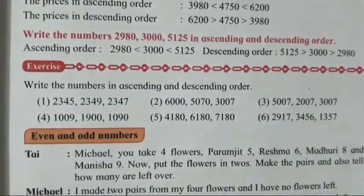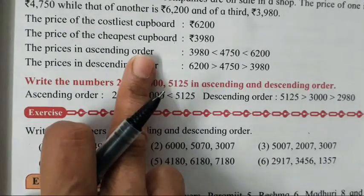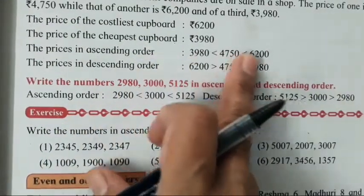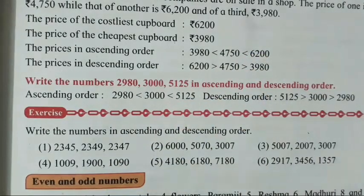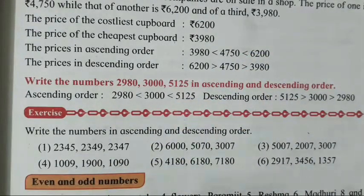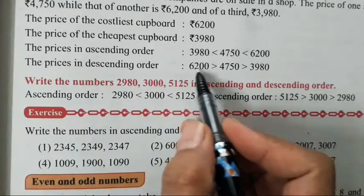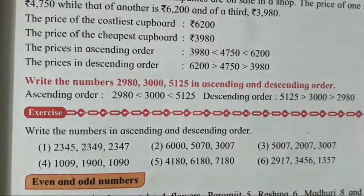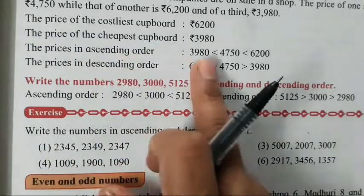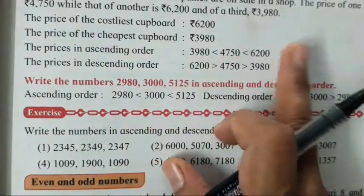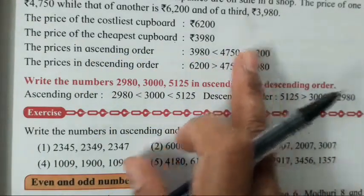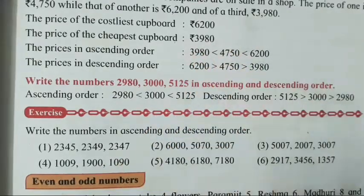Now before that we will study what is ascending order. Ascending order means small to big numbers, chote se bada number we have to write. And what about descending order? Big to small, bada se chota number we have to write. So if you get the ascending order properly and correct, descending is just the reverse - you write the numbers in the opposite order. That's it.